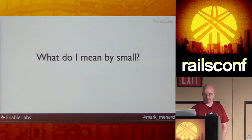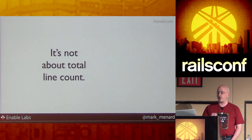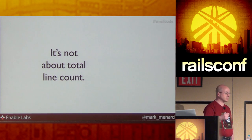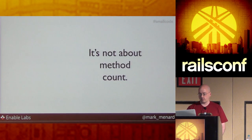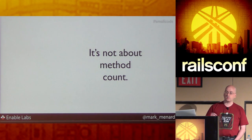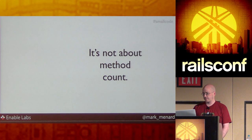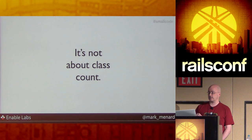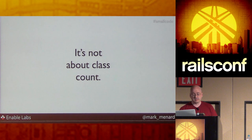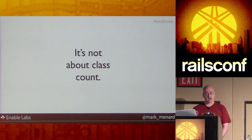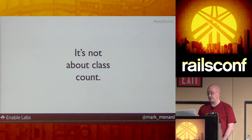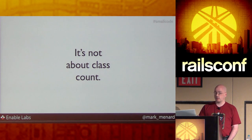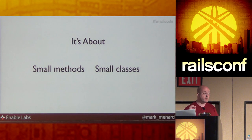So what do I mean by small? It's not about total line count — well-designed code will typically have more lines of code than bad code, just from the overhead of declaring methods and classes. It's not about method count — well-factored code is going to have more smaller methods. It's not about class count — well-designed code is almost definitely going to have more classes than what I call undesigned code. Small code is not about decreasing the number of classes in your system. It's about well-designed classes. Small methods, small classes.